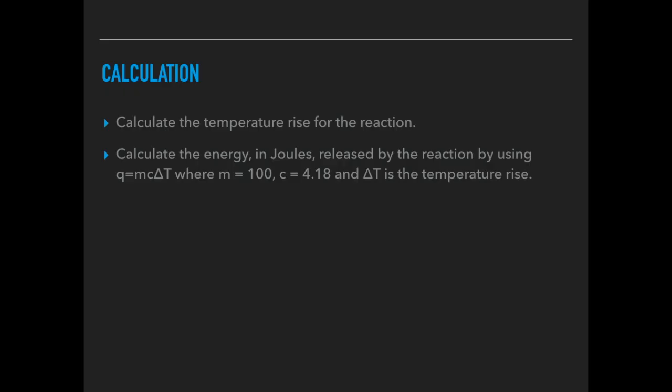And so the calculation now. First you'd calculate the temperature rise for the reaction. Then you would calculate the energy in joules released by the reaction using the q equals mc delta t expression. In this case m would be 100, because we've used 50 of each solution, 50 cm cubed of each solution. So that would give you 100 grams, mass of solution. C is the specific heat capacity of the solution. We're assuming it's the same as water, 4.18. Delta t is the temperature rise. You'd then convert the joules into kilojoules by dividing by a thousand.